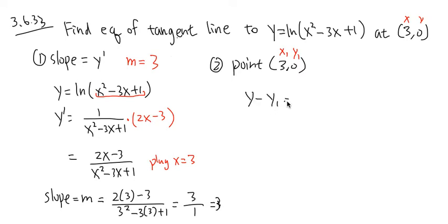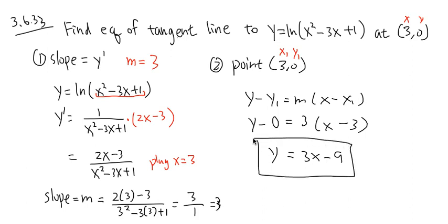y minus y1 equals m times x minus x1. Let's just plug in numbers. y minus y1 is 0, equals m, which is 3, times x minus x1 equals 3. x1 is 3, and m equals 3. Altogether, y minus 0 is just y, and that equals 3 times x is 3x, 3 times negative 3 is minus 9. This is the equation of the tangent line.